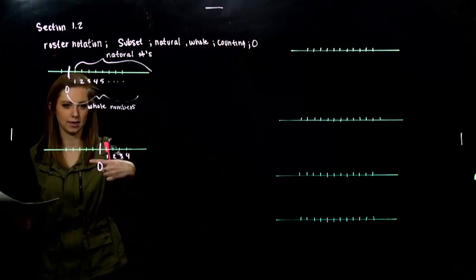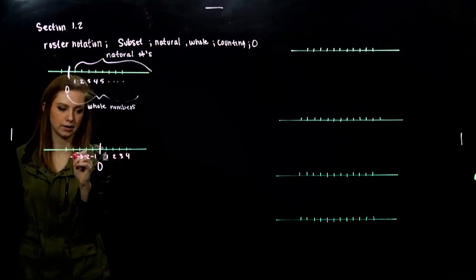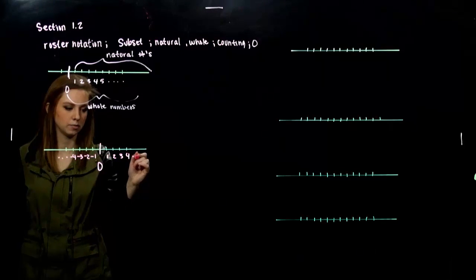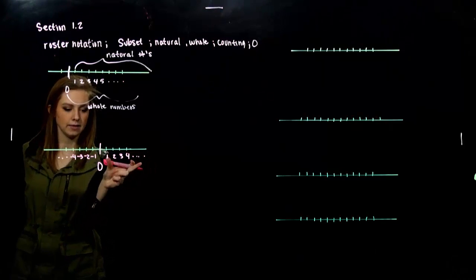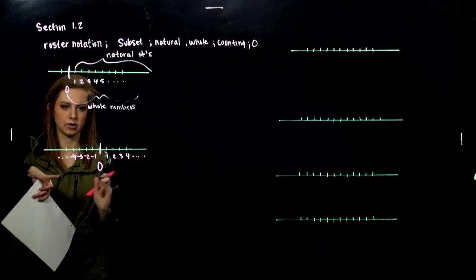So, negative one, negative two, negative three, negative four. Continuing off in both directions. So, I've got the naturals over here. Whole numbers. And now, all together, this is called the integers.